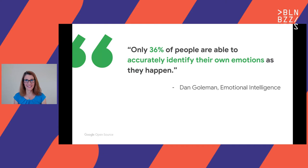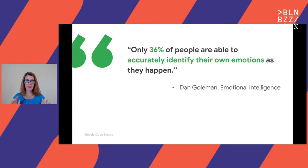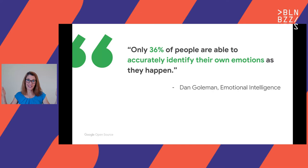Unfortunately, as a species, we're just really bad at this. Dan Goleman, who wrote the book on emotional intelligence, says only 36% of people are able to accurately identify their own emotions as they happen. In open source, things are happening all the time — whether in GitHub, Twitter, or the issue queues. We are not always very aware of how we're feeling, how others are feeling, and being really strategic with our interactions with people. That's just how we're wired as humans.